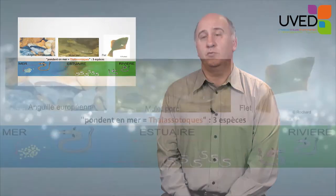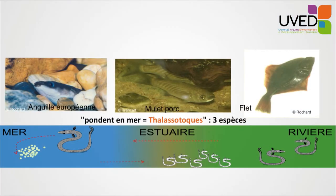The second type of diadromous migrating fishes do the reverse: these species reproduce in the sea. Reproduction may take place near the coast for the mullet or flounder, or very far away such as the eel, which goes to the Sargasso Sea close to the American coast to reproduce. The eggs hatch in the sea, the larvae cross the estuary and go to freshwater where they finish growing. When they near sexual maturity, they migrate the reverse way, crossing the estuary again and going back to the reproduction areas in the sea.